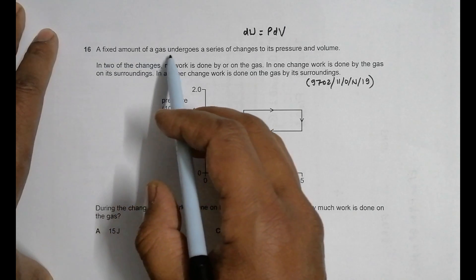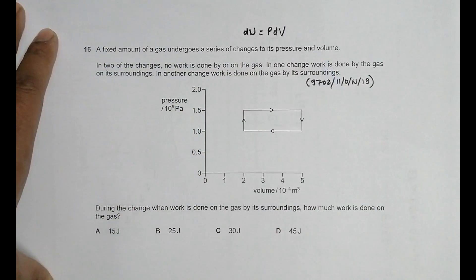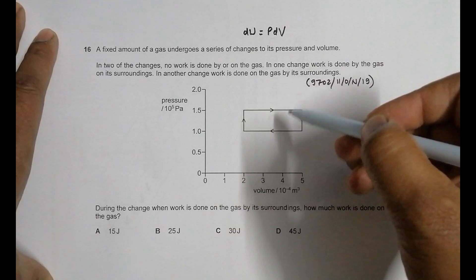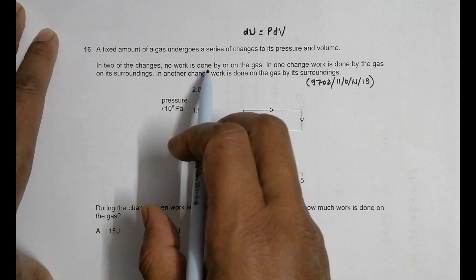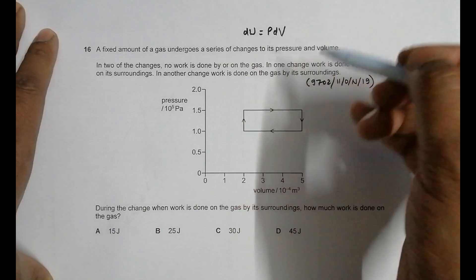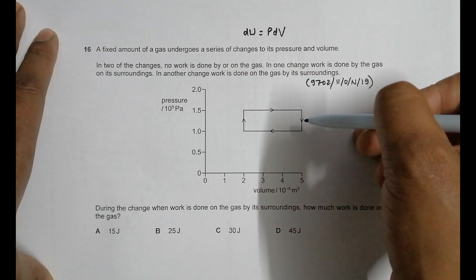A fixed amount of gas undergoes a series of changes to its pressure and volume. As you can see from the PV diagram, we can see the changes. In two of the changes, no work is done by or on the gas.